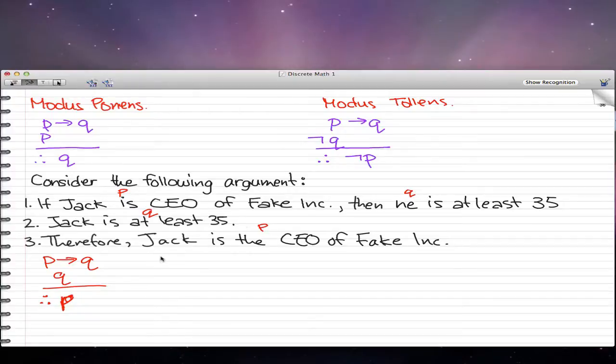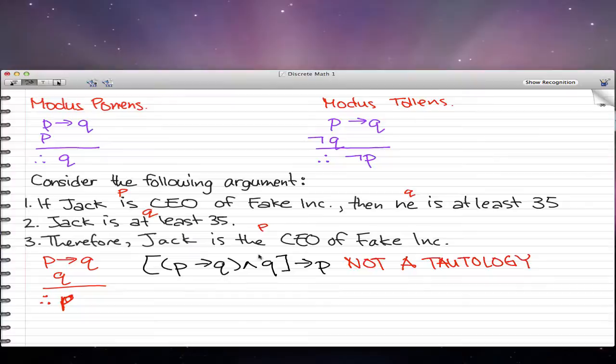This is the trap in its symbolic form. I want to make clear, this is not a tautology. This symbolic form is a representation of the argument, but it is not a tautology. Why?